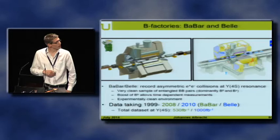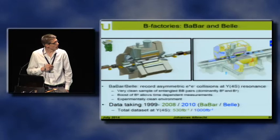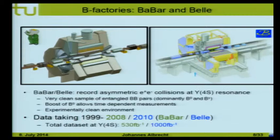In the last decade, flavor physics was dominated by the B factories BaBar and Belle — experiments at asymmetric e+e- colliders that collided at the Y(4S) resonance, which decayed into BB-bar pairs. They ran very successfully for the last decade and collected very large data sets. Although data taking is finished for some years now, there are still very interesting results coming out, and I will show you some.